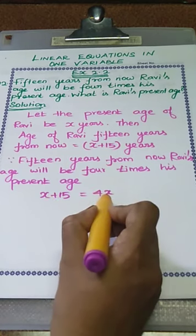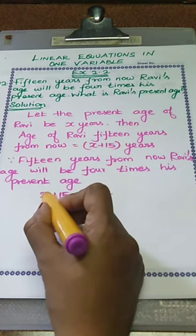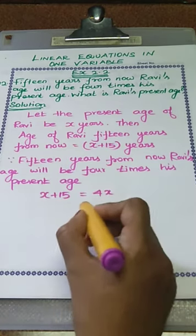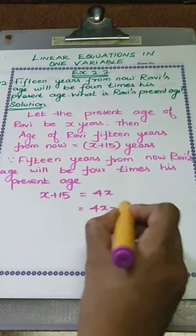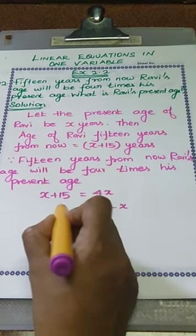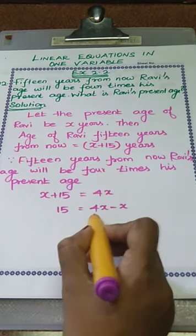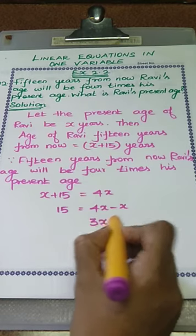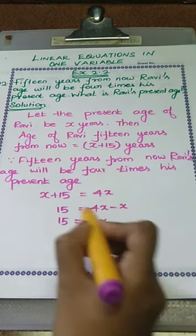Now we need the x value. So we have to move the x from the LHS to the RHS. That gives us 4x minus x on the RHS. Our LHS value is 15. 4x minus 1x is 3x. So 3x is equal to 15.